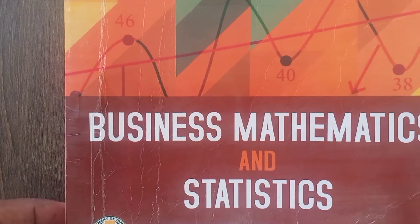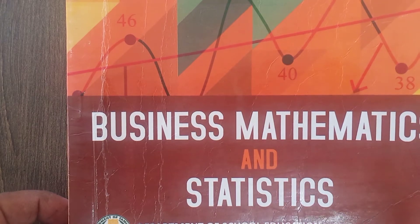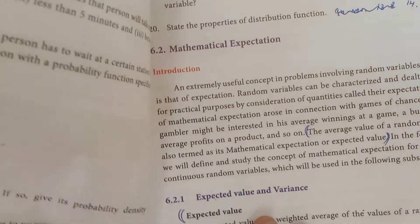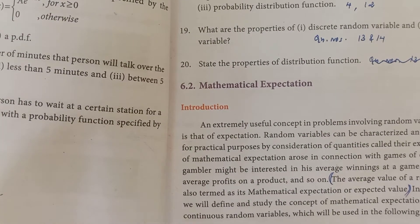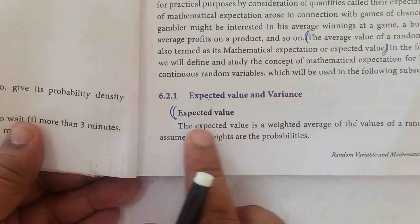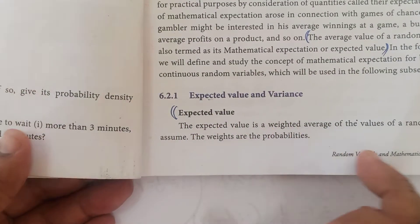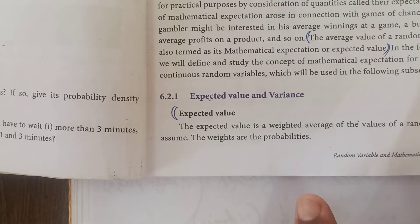Hi student, this is Okumar. 12th standard business mathematics and statistics, chapter number 6, exercise 6.2. Expected value and its variance.